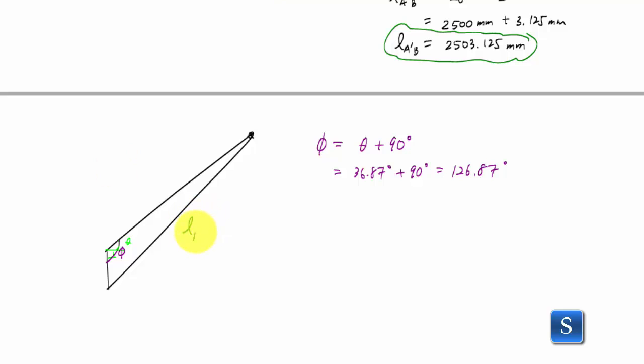This side right here was this LA prime B. This was my original length L zero, which was 2.5 meters. And this side right here represents that vertical displacement of point A from A to A prime.